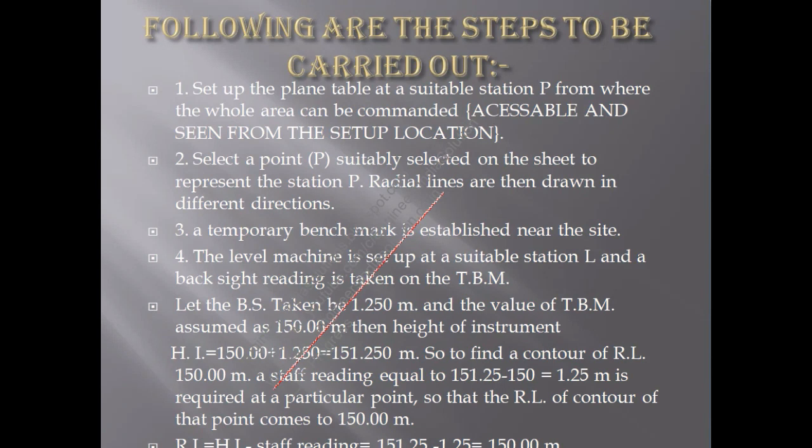From the point L we take the reading of the back sight. Presuming that the back sight is 1.25 meter and the value of TBM or the benchmark assumed is taken as 150 meters, then the height of instrument will be 150 meters plus 1.25 meter which is equal to 151.25 meters. So to find a contour of RL 150 meter, a staff reading that is equal to 151.25 minus 150 which is equal to 1.25 meter is required at a particular point so that the RL of the contour comes up to be 150 meters.